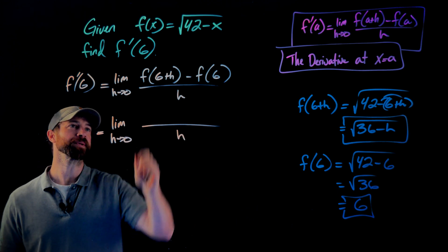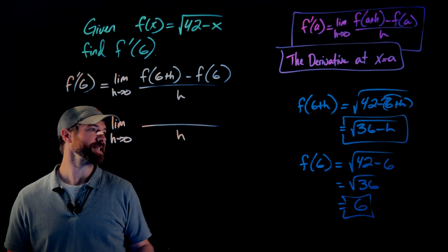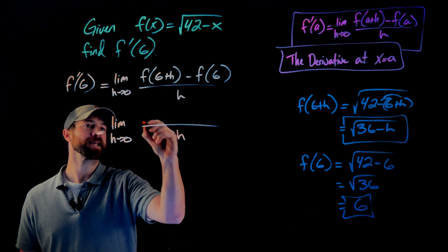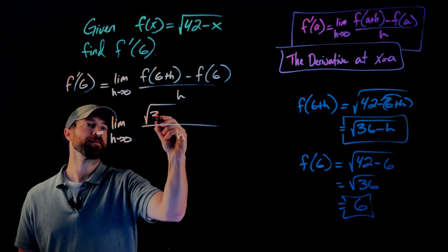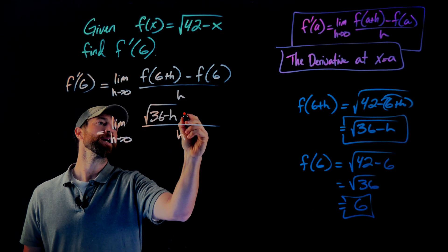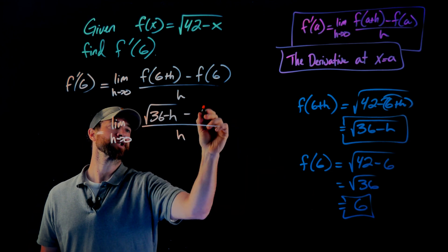All right, then what I'm going to do is replace these with the expressions I just calculated here. f of six plus h was the square root of 36 minus h minus f of six, which is simply six.